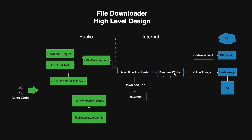The download worker is a component responsible for executing the actual file download logic for a single job. It takes care of making network requests, downloading data in chunks, updating progress, and writing the file to disk. We create one download worker instance within DefaultFileDownloader and that single instance is reused concurrently for all active download jobs. Alternatively, we can create multiple download workers — up to the number of maximum concurrent downloads, meaning 6 instances. Step by step, the download worker creates a temporary file on disk, checks whether the download can be resumed and resumes it if possible, then starts a streamed download using a network client, reads incoming data in chunks, appends them to the temporary file, and finally finalizes the download and performs cleanup.